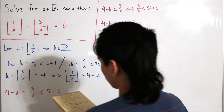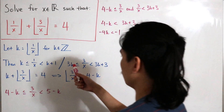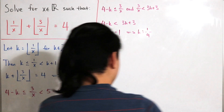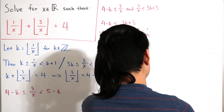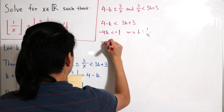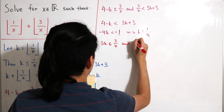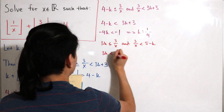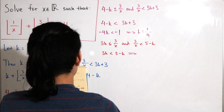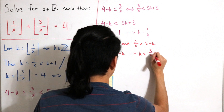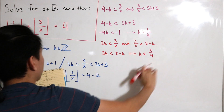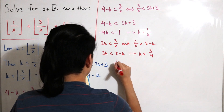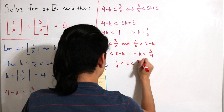For the other part, we have 3k less than or equal to 3 over x, and 3 over x strictly less than 5 minus k. Applying the same technique — comparing 3k strictly less than 5 minus k — and solving gives us k less than 5 over 4. Combining both, we get 1 over 4 less than k less than 5 over 4.